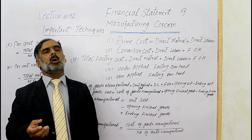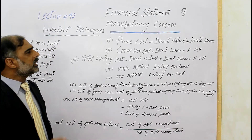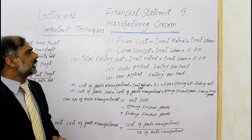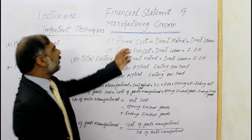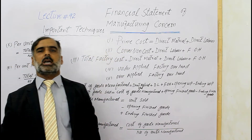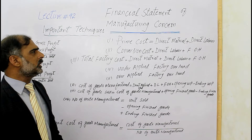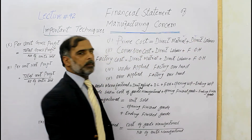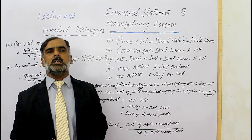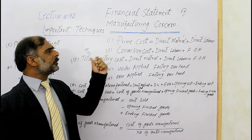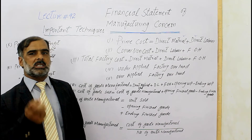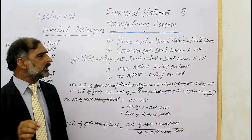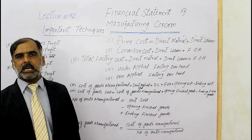Today we use the formula and apply it using a numerical example. We have a prime cost. We calculate the prime cost. Production cost includes a prime cost. Prime cost is equal to direct material and direct labor. There are two types of cost: material cost and direct labor cost.